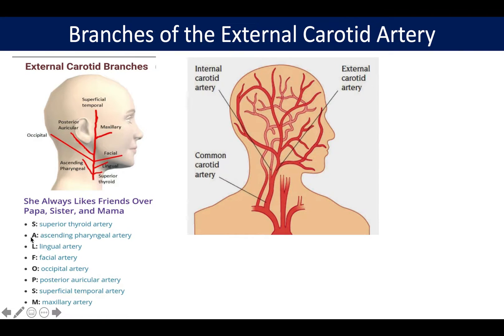So we have eight branches of the external carotid artery to remember: superior thyroid, ascending pharyngeal, lingual, facial, occipital, maxillary, posterior auricular, and superficial temporal.